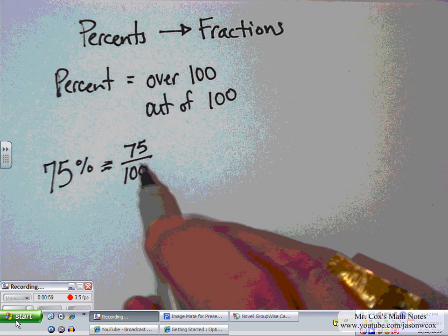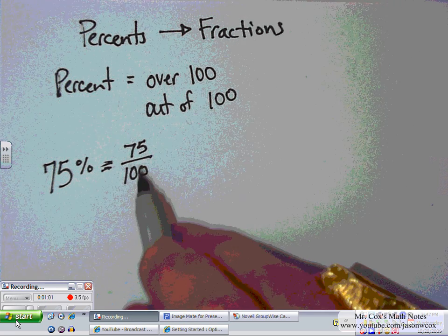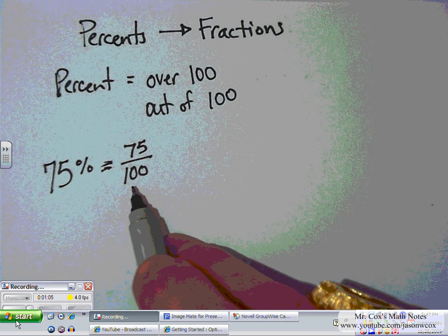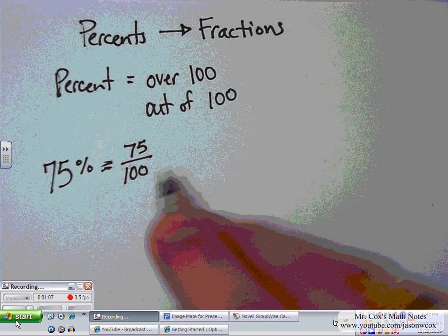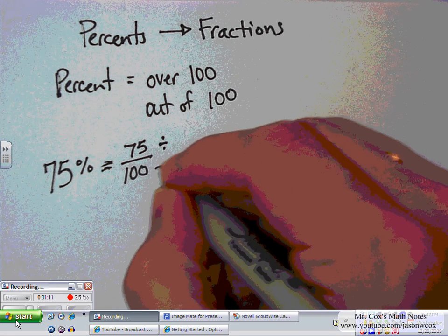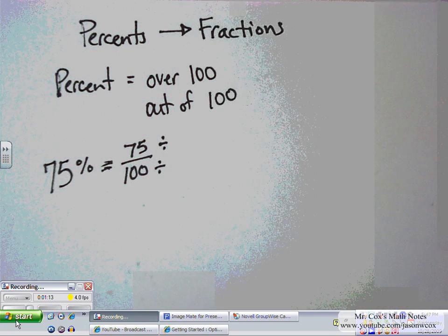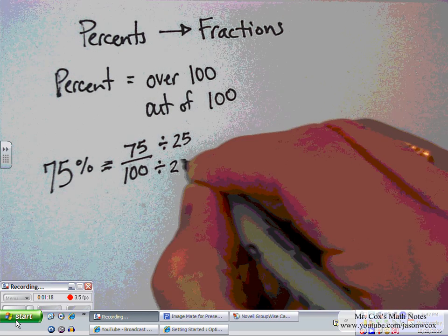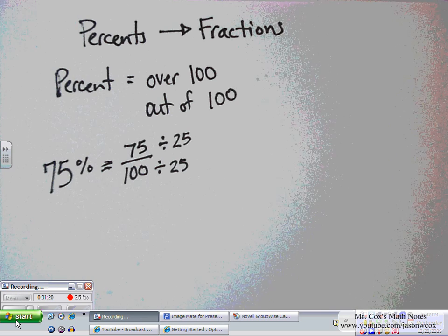75% does mean 75 over 100, but the problem is this is a rather large number for a fraction. I wouldn't want to use that. But what I can do is I can reduce. I know that I can divide both the numerator and denominator by 25. So, let's go ahead and do that.